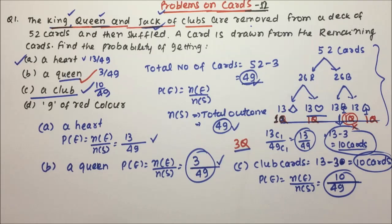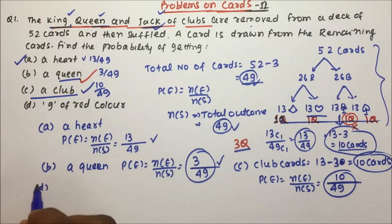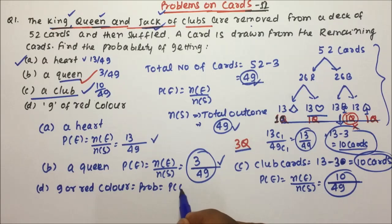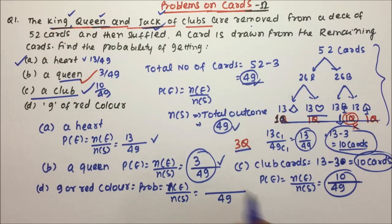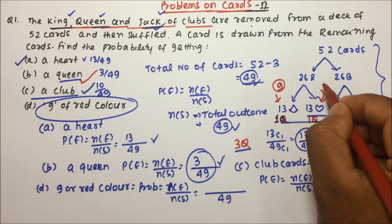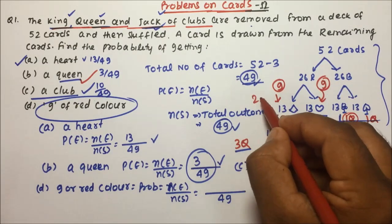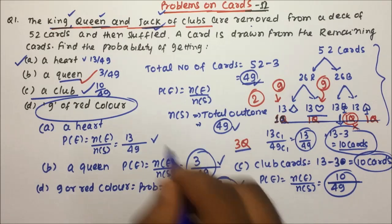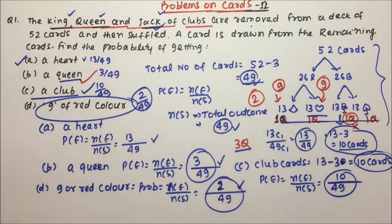Question D: you want a 9 of red colour. Probability = Ne / Ns. Total cards = 49. How many 9s are there in red? One 9 in diamond and one 9 in heart — total 2 red 9s. Selecting 1 from those 2 gives probability = 2/49. So 2/49 is the answer for question D.